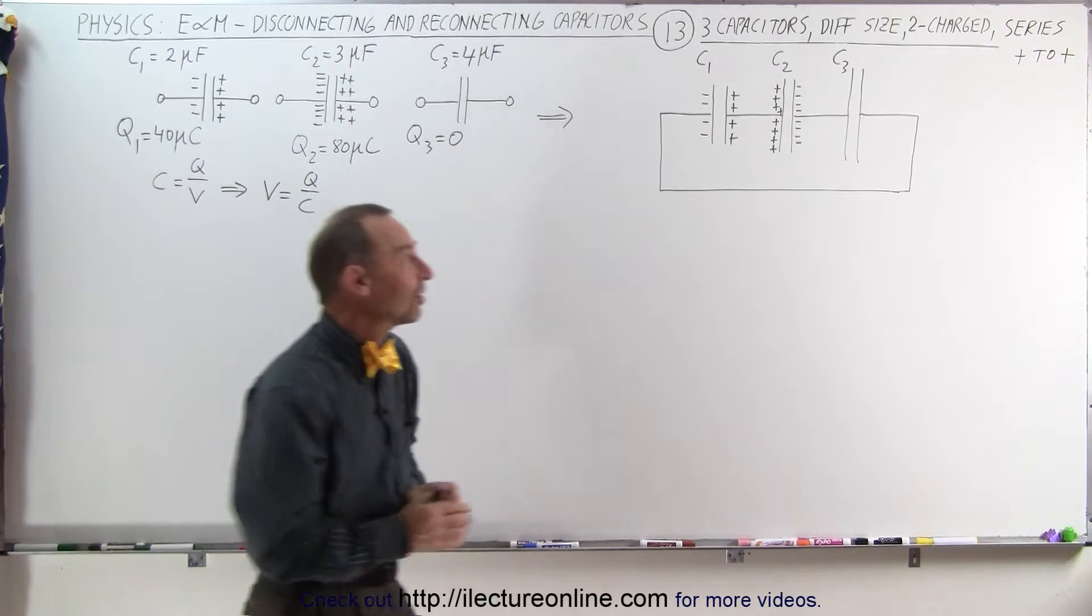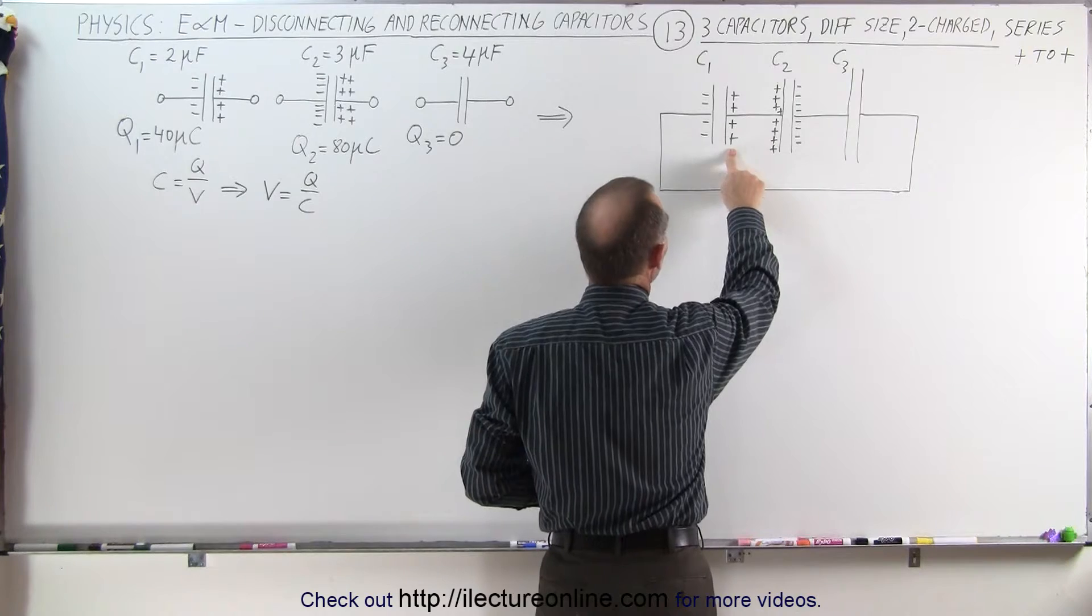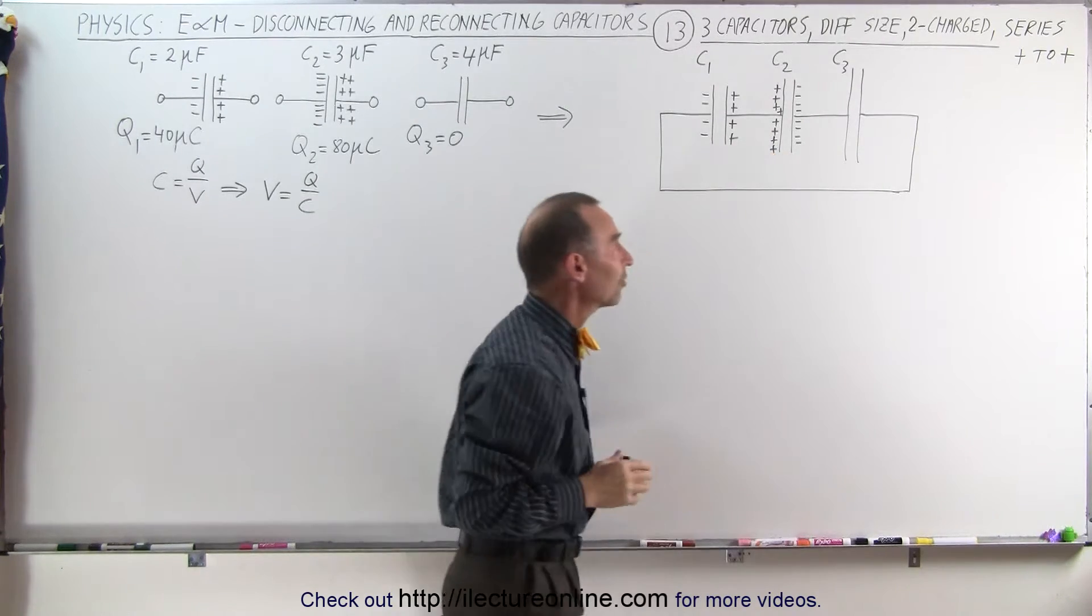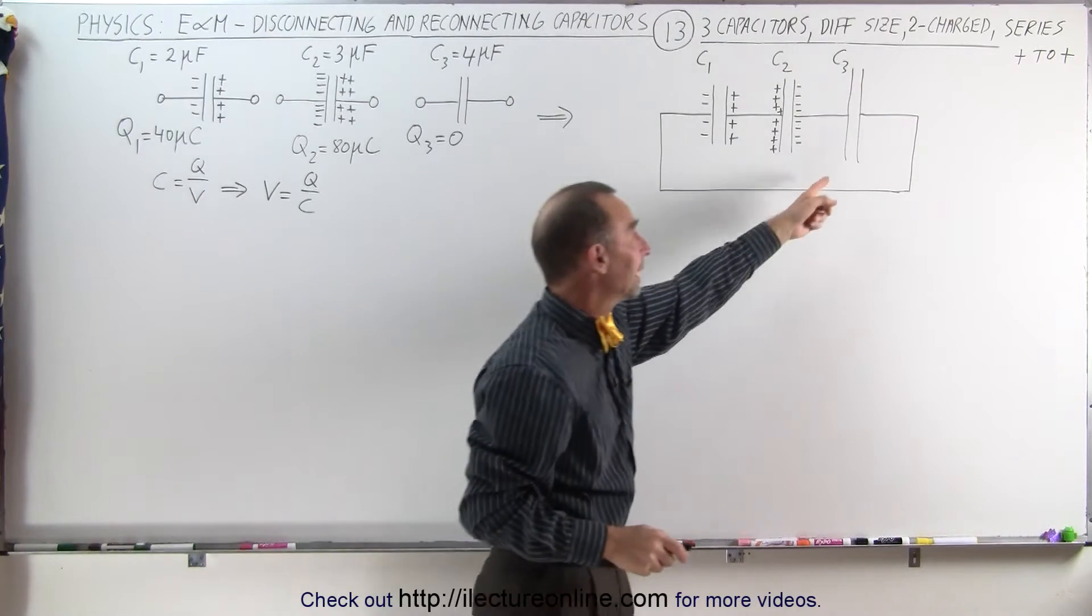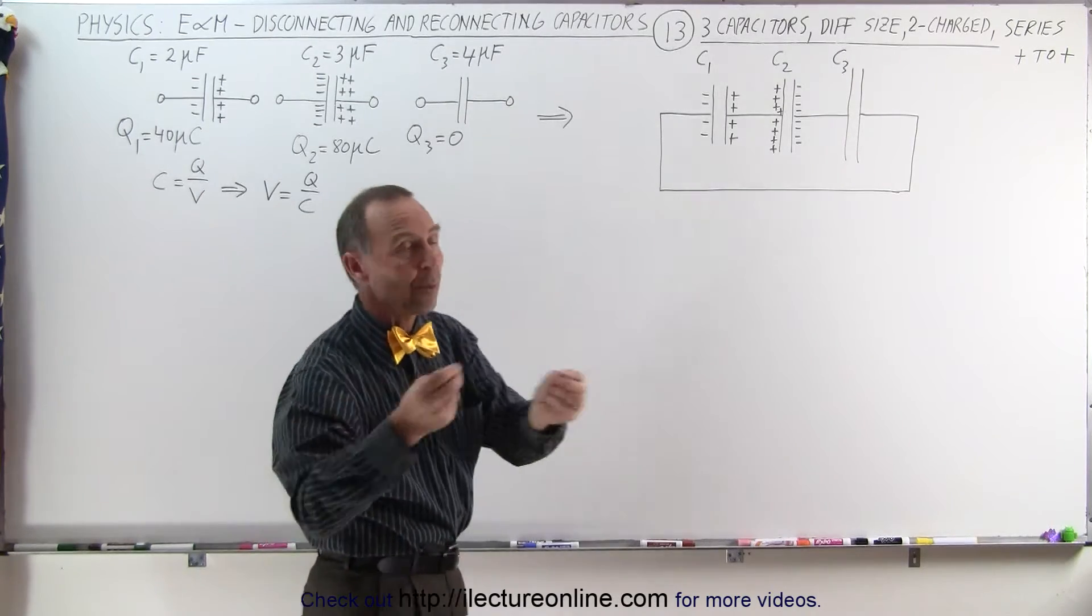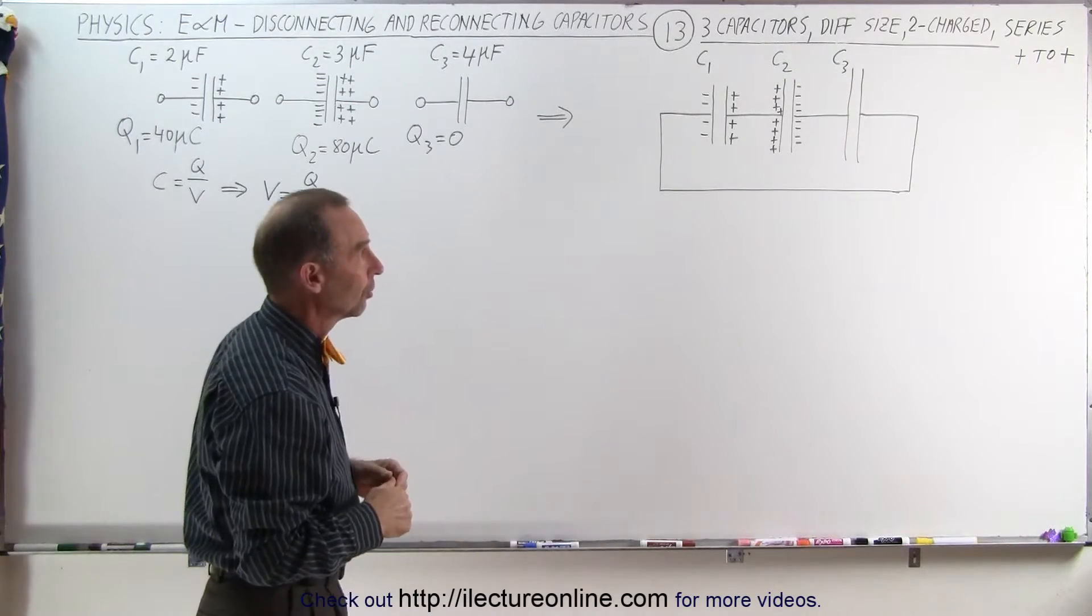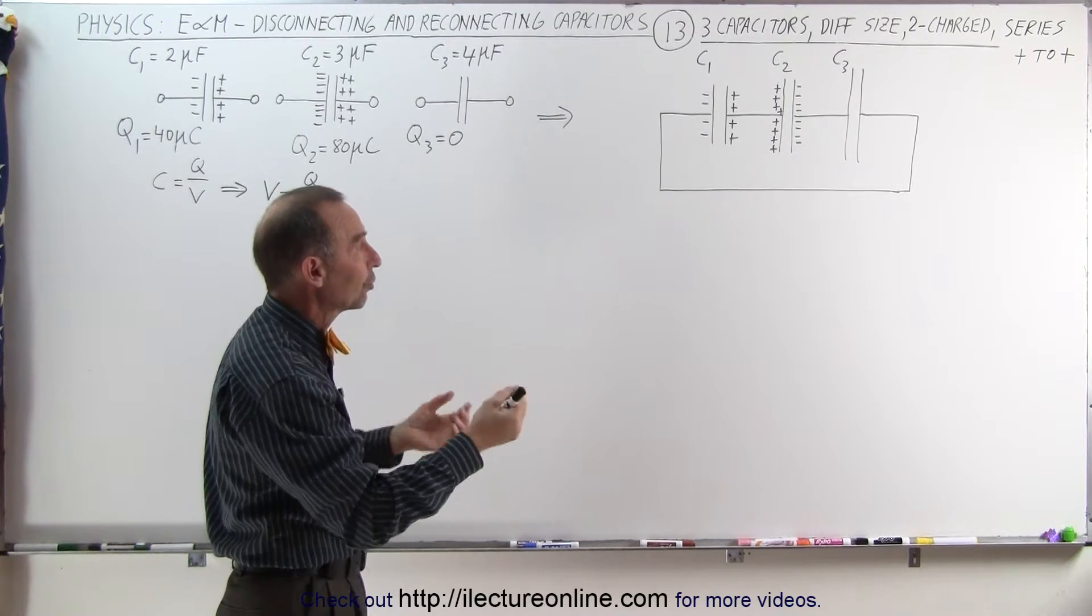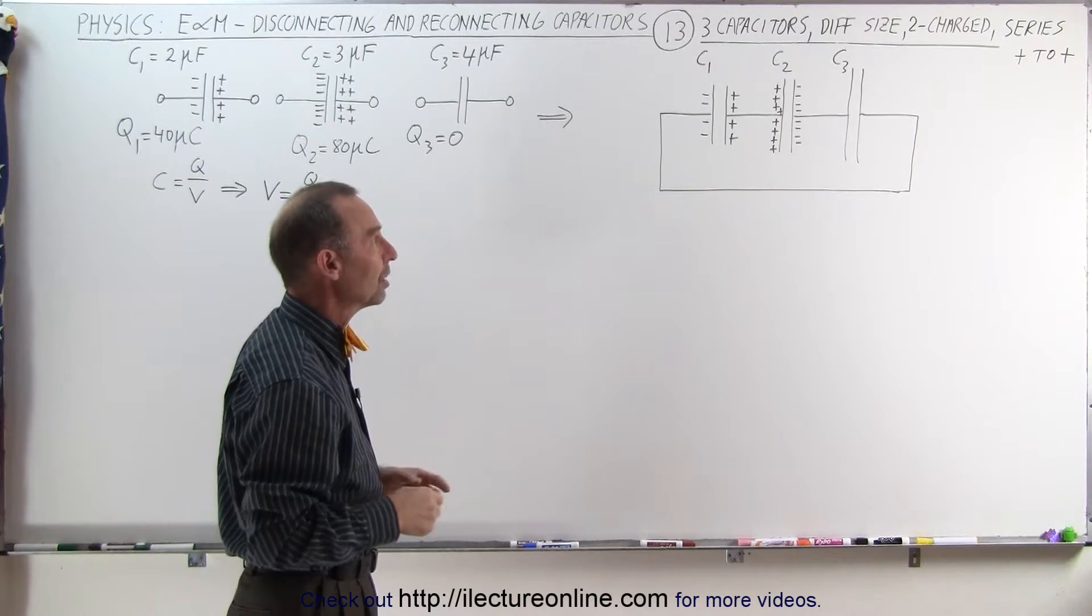What's different about this example is that we've now connected the positive side to the positive side of the first two charged capacitors. The third capacitor did not have charge initially when we connected three capacitors. The objective is to find the charge on each of the three capacitors when steady state has been achieved.